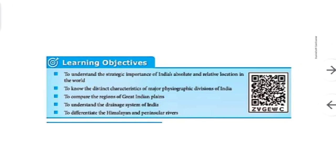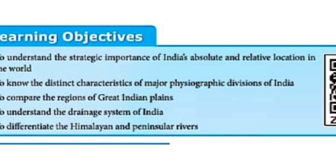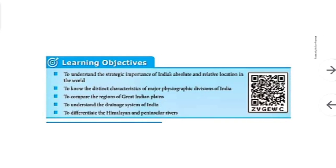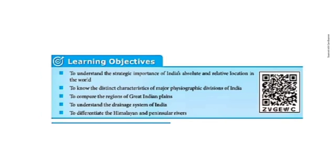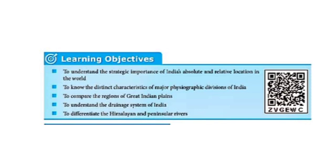Regarding the drainage system - the river system includes Ganga, Brahmaputra, and Yamuna. We can also learn about Himalayan rivers such as Ganga, Yamuna, Indus, and Brahmaputra - rivers originating from the Himalayan mountain. Peninsular rivers include Godavari, Narmada, Tapti, Vaigai, and Kaveri.